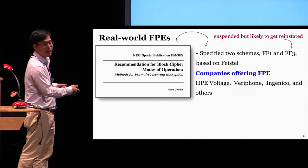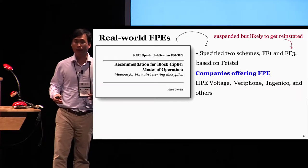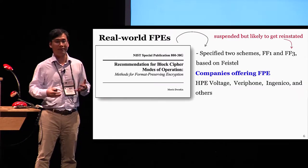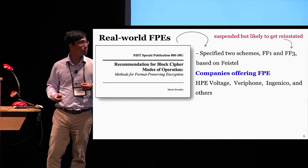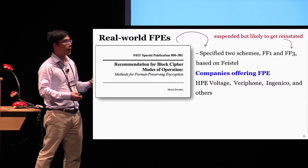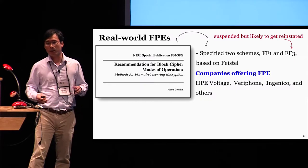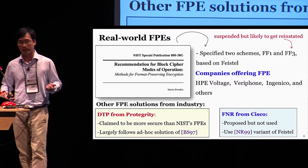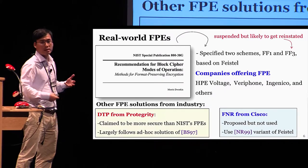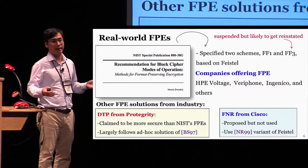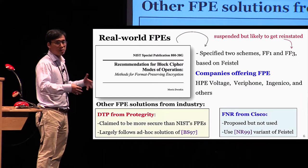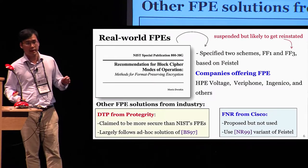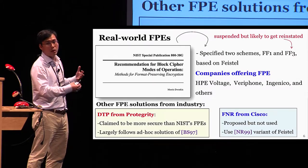The most important real-world schemes are the NIST standards FF1 and FF3, both based on Feistel networks. FF3 is currently suspended due to a recent attack by Durak and Vaudenay, but because FF3 is pretty cheap, it seems likely to get reinstated. Several companies offer FPE products, such as Voltage or Verifone, and most of them either use NIST standards or some close Feistel variants. However, there are still non-Feistel FPE solutions from industry. For example, Protegrity uses a scheme called DTP and claims better security than the standards. DTP largely follows an ad hoc construction from the 90s. Cisco also proposed an FNR scheme, but to the best of our knowledge it is not in use. FNR is based on non-balanced variants of Feistel.